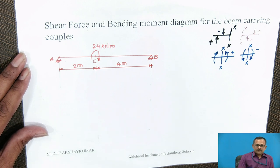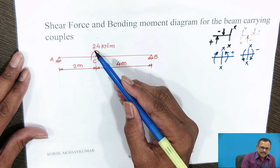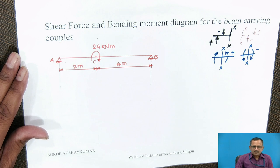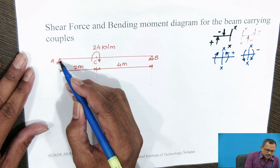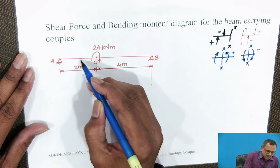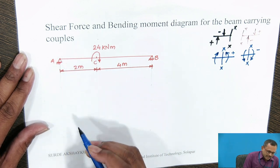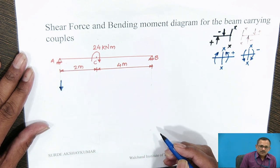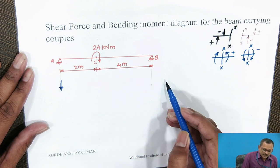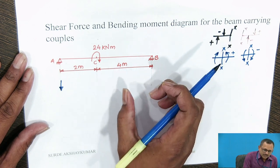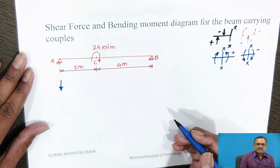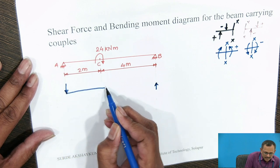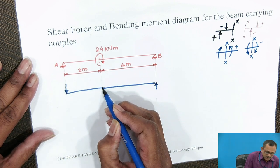Think about what the effect of the couple acting at point C will be on beam AB. The couple acting in the clockwise direction causes the portion AC to lift up at A. Therefore, the reaction at A will act in the downward direction. The couple acting in the clockwise direction at support B depresses portion CB downward, and therefore the reaction at B acts in the upward direction. So, the reaction at A is acting in the downward direction.